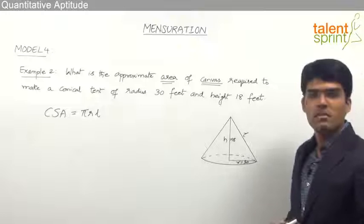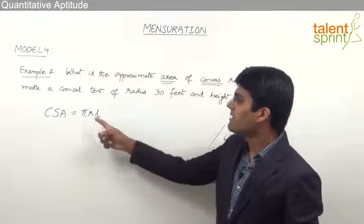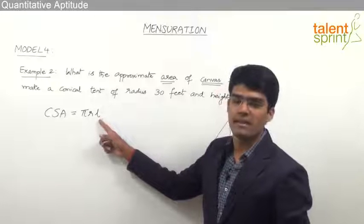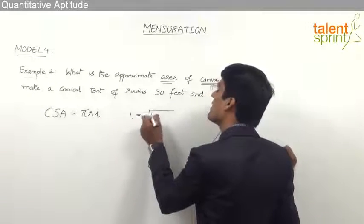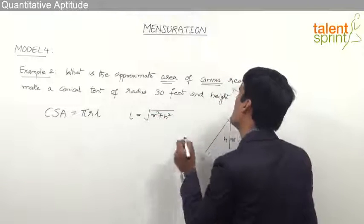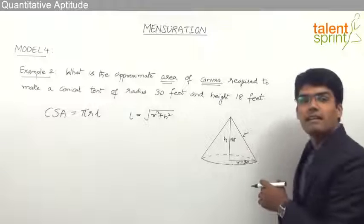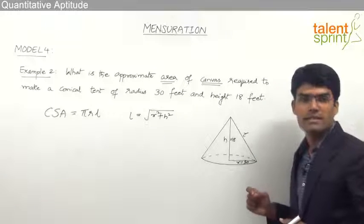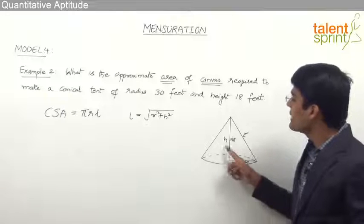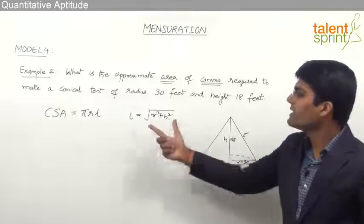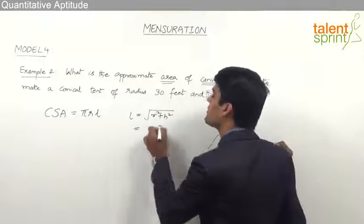From the question, radius r = 30 feet and height h = 18 feet. The formula requires radius r and slant length l. The slant length l can be calculated as √(r² + h²), because the slant length, height and radius form a right-angle triangle, and by the Pythagorean theorem, hypotenuse² = base² + height². Therefore l = √(r² + h²).